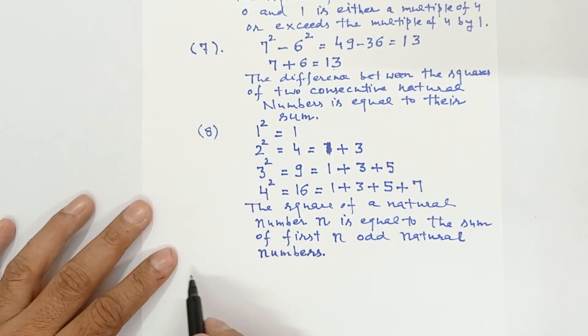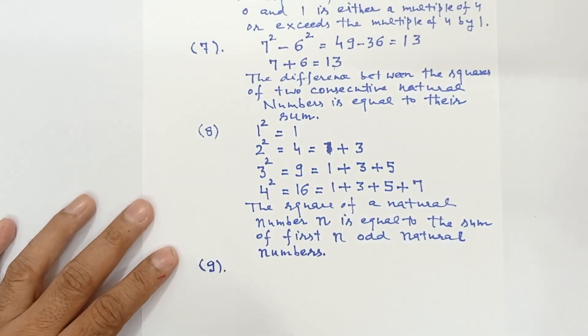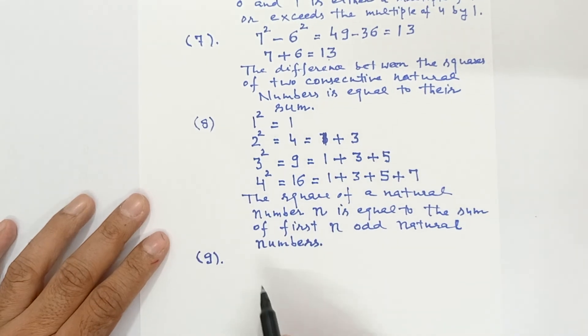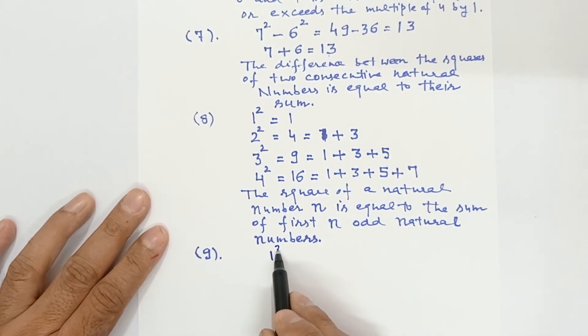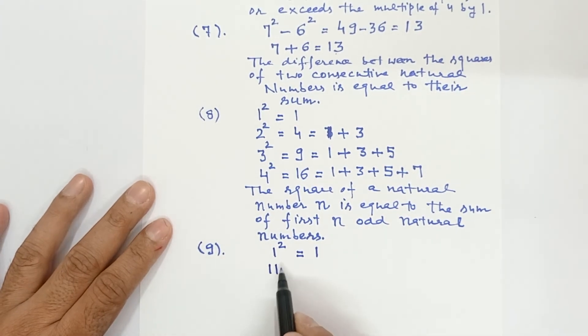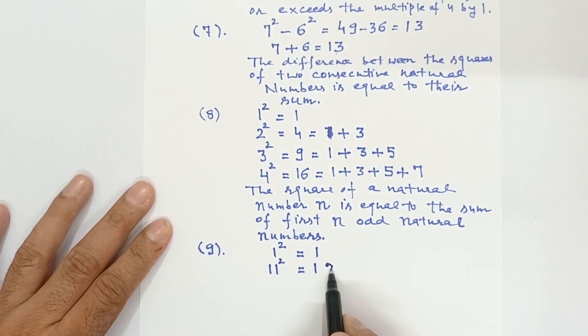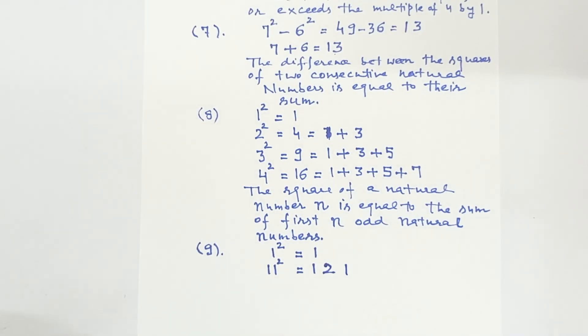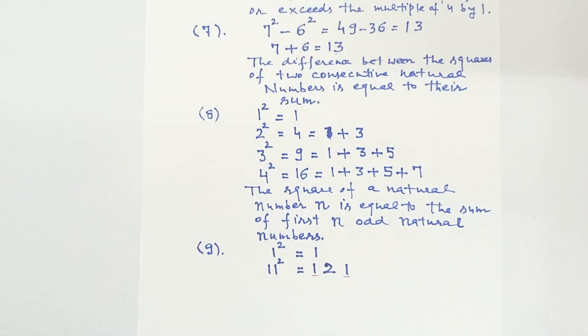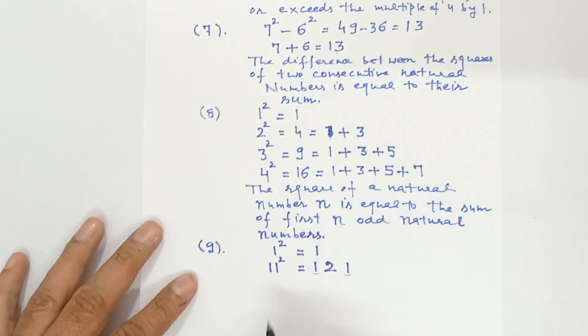Now there is 9th fact. Squares of natural numbers which are composed of only digit 1, they follow a peculiar pattern. I have written 1 square, 1 square is 1. Then I have written 11 square, 11 into 11 that is 121. 121 is written this way. Now if I add this 1 and 1, the central term 2 is obtained. This is the peculiar pattern.